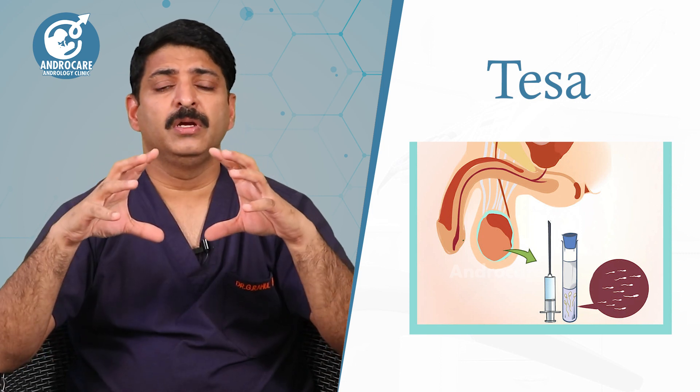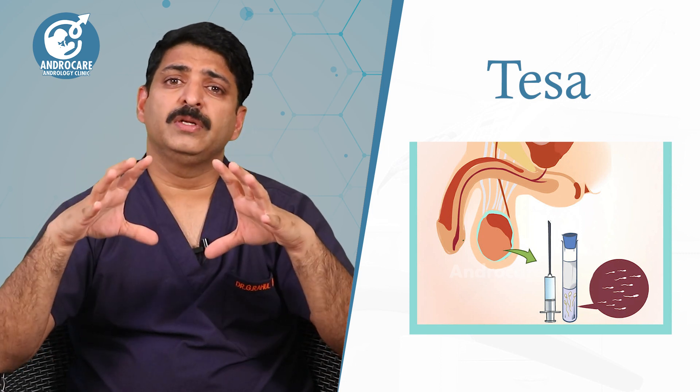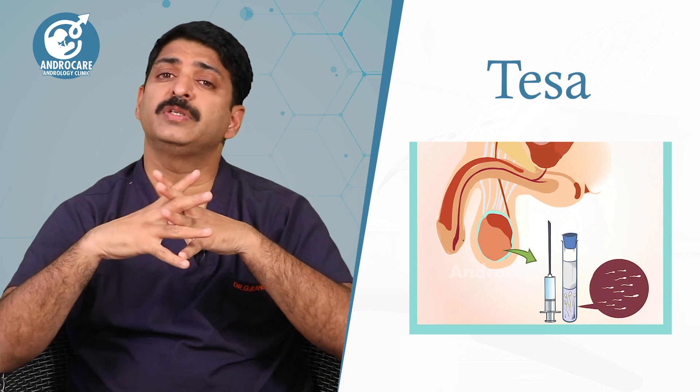TESA is a simple procedure where we give anaesthesia to the testis. Generally we apply a cream to the testis, most of the testis becomes numb. Then we take a small needle — similar to how we take blood from the veins — and take testicular tissue from various regions. The advantage with TESA is this is not a surgery; this is only an aspiration procedure.